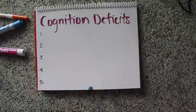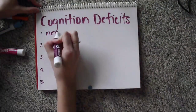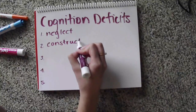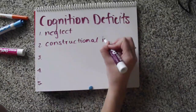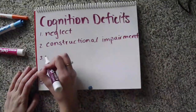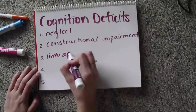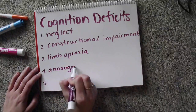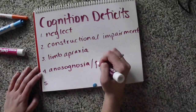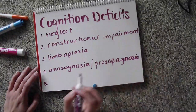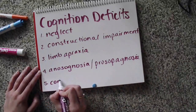Cognitive deficits from right hemisphere disorder can manifest in many ways. Some of these ways include disorders such as neglect, constructional impairment, limapraxia, anosognosia and prosopagnosia, and confabulation.